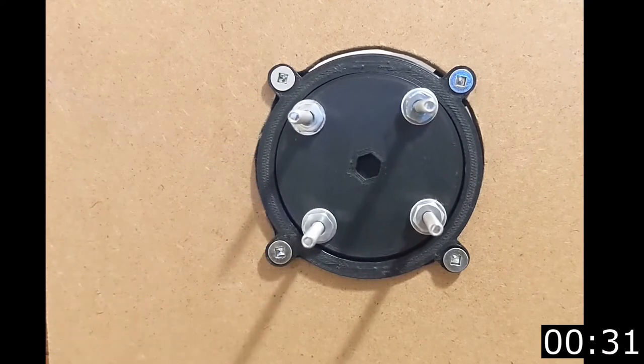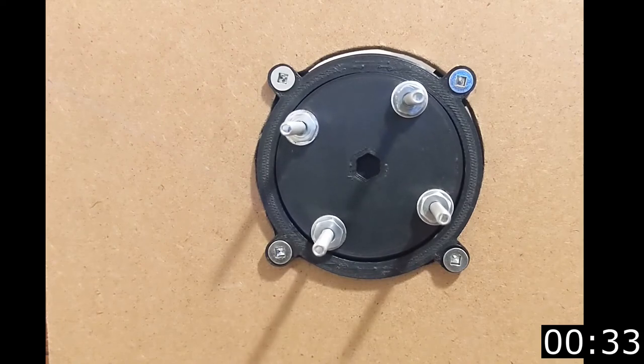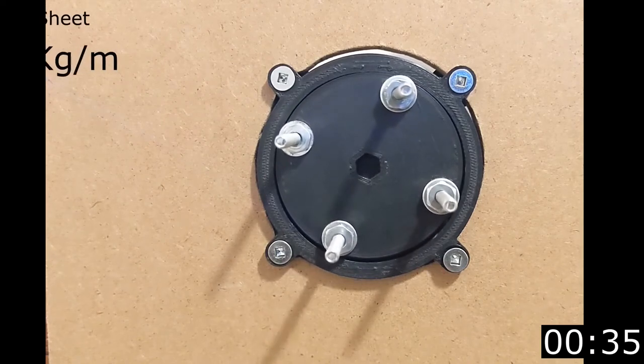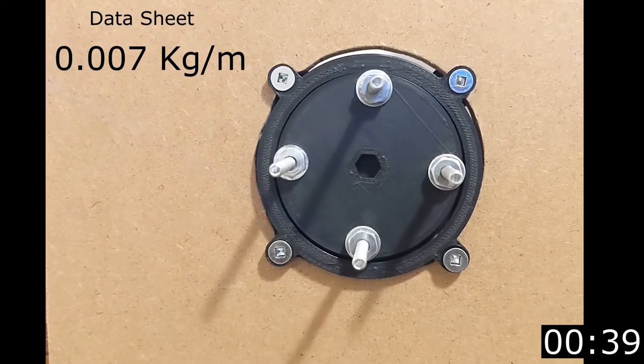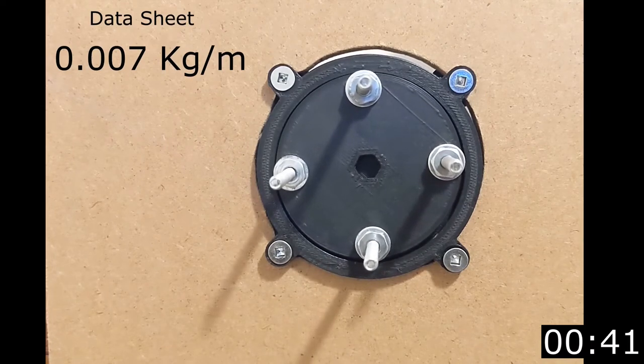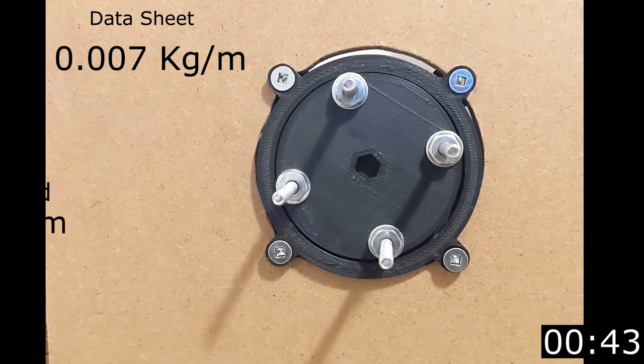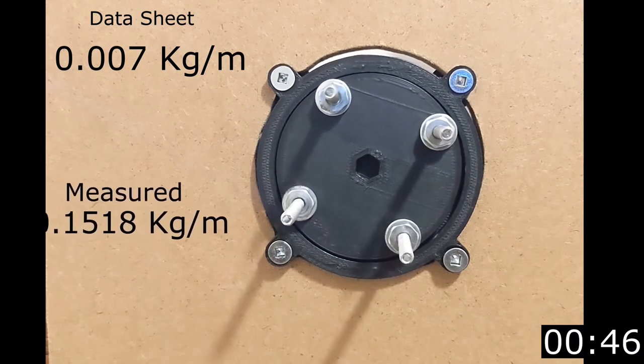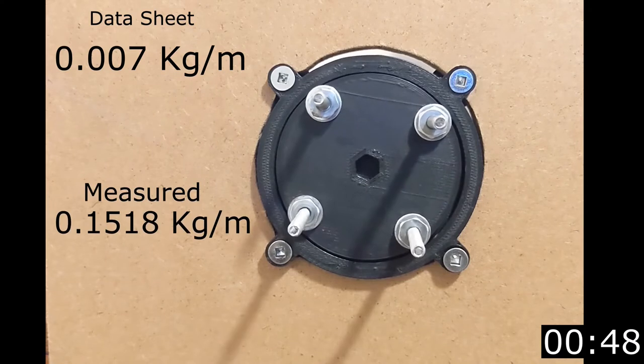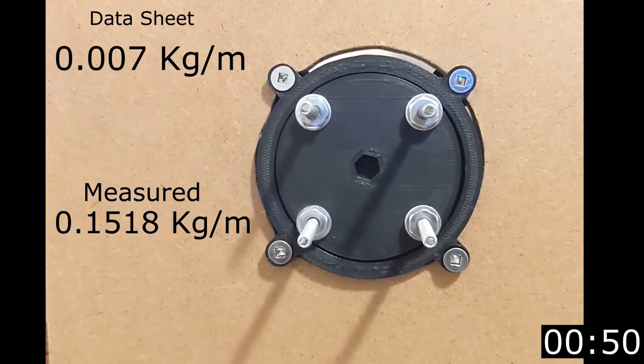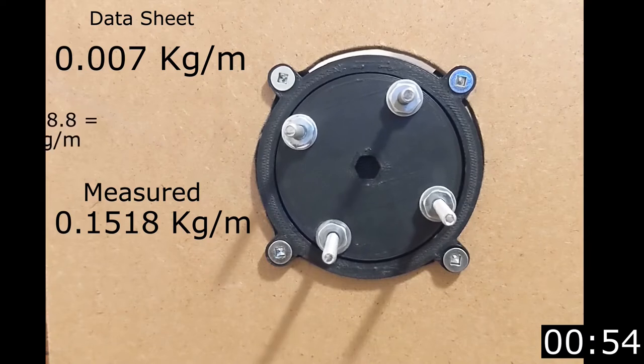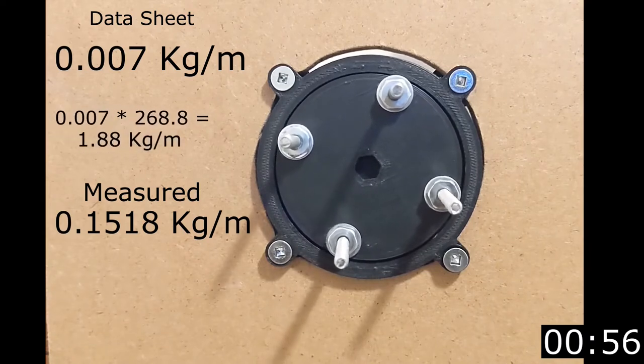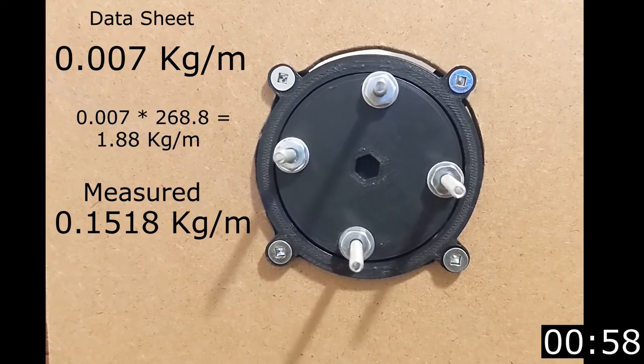The motor outputs 0.007 kilograms per meter - that's just the motor with the yellow gearbox. And when I tested, the stall torque was 0.1518 kilograms per meter. Now that seems good, except when you consider the gearbox is there, which it should be 1.88 kilograms per meter, and we're measuring 0.1518, which is pretty bad actually.